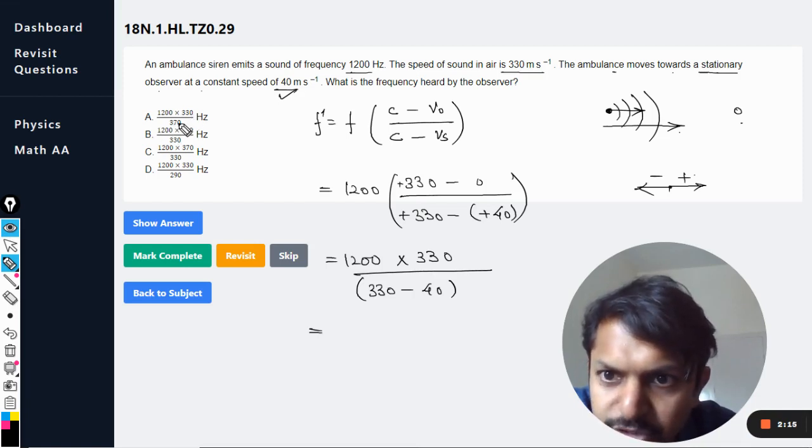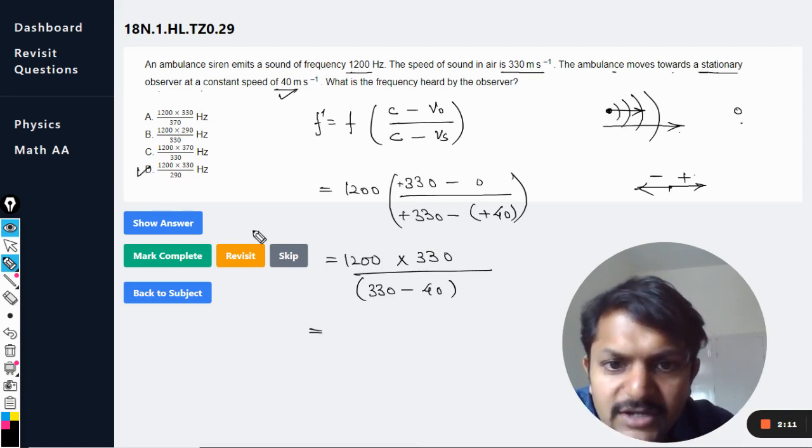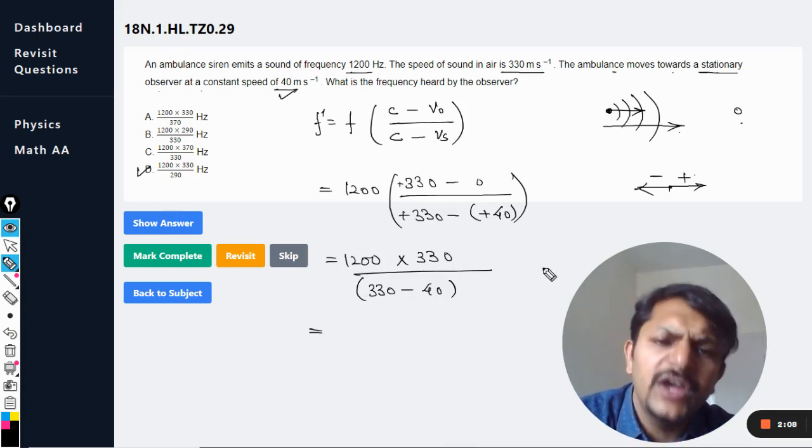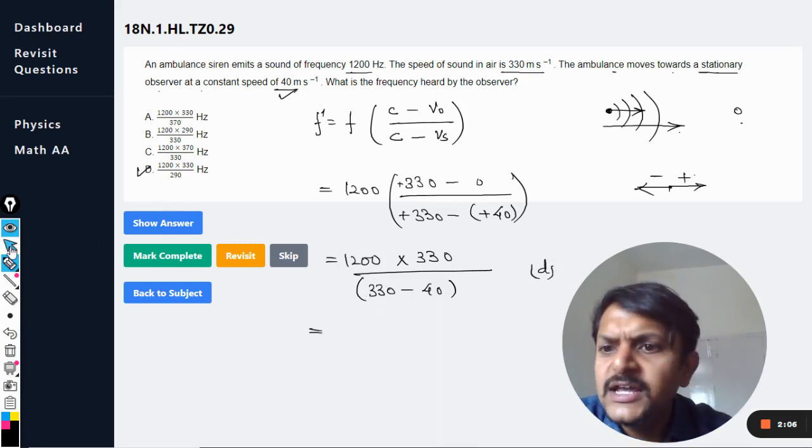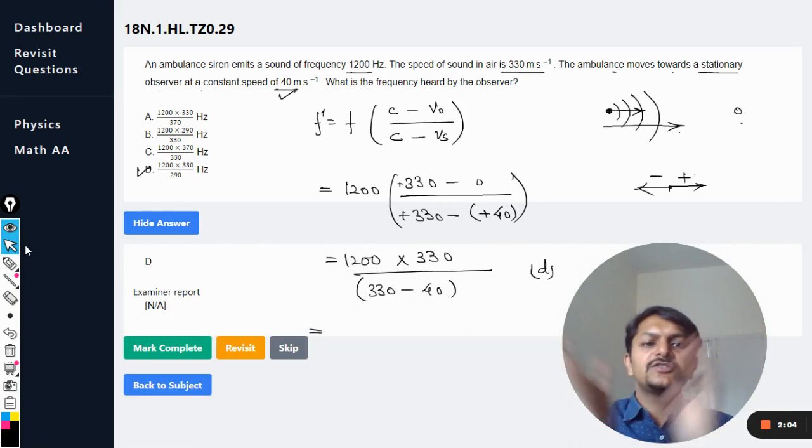Calculator is not required, so we can see 1200... so D is the correct answer. I've double-checked it, D should be the answer. Let's see the mark scheme, and yes, dear students, the answer is D.